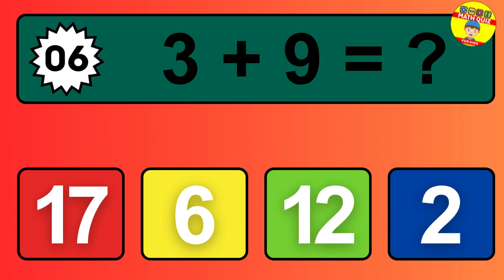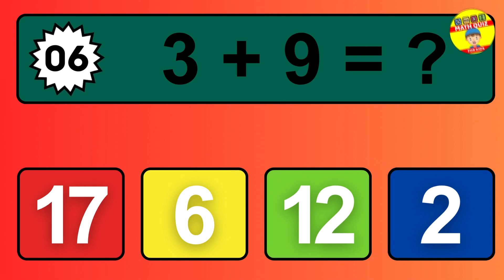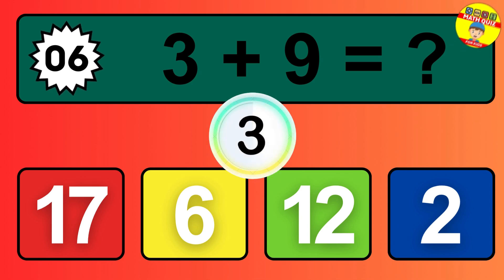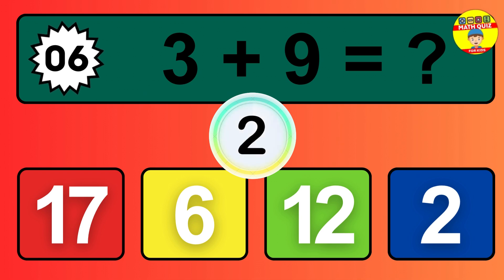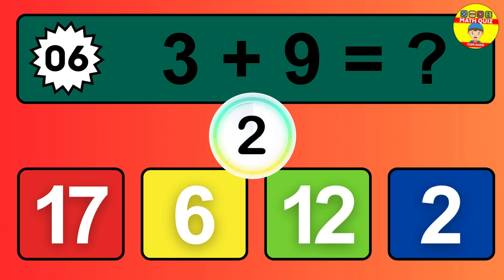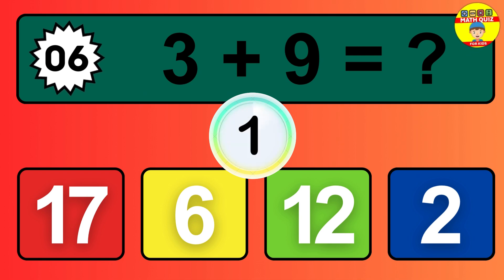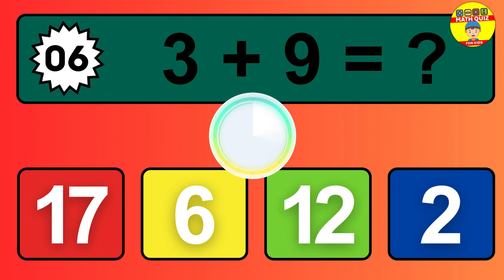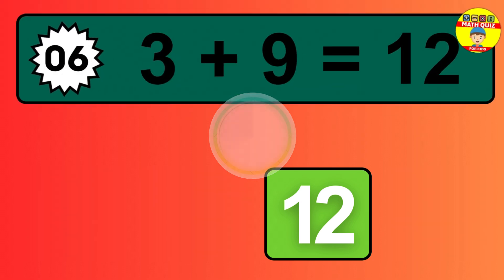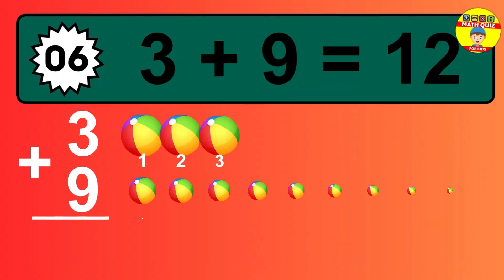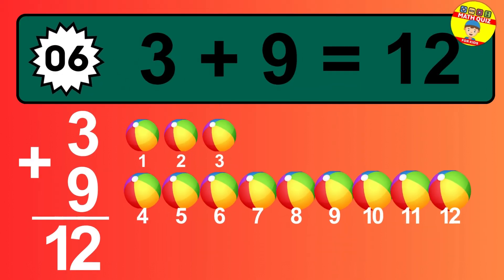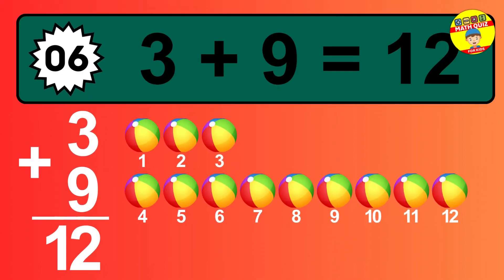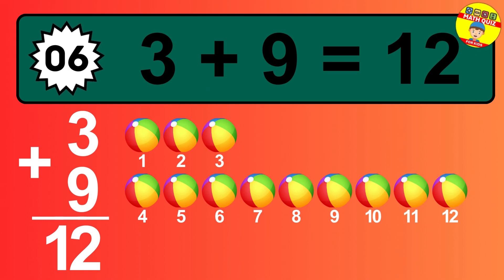Question 6. 3 plus 9 equals what? The answer is 3 plus 9 is 12.